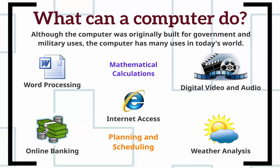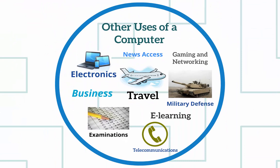Let's look at what computers can do. We have certain preconceived notions about common things computers can do: word processing, which we're going to do a fair amount of in this class; internet access; digital video and audio; mathematical calculations and binary numbers. And of course there's online banking, weather analysis, the entire reservation system that the airline industry operates on. Some of your tests may be completely electronic, and speaking on the phone these days tends to be a completely digital experience.